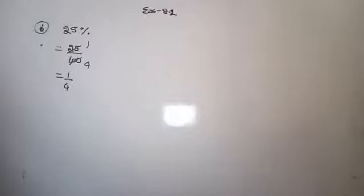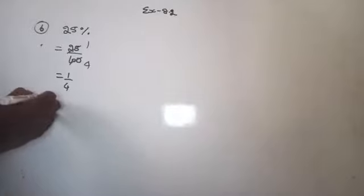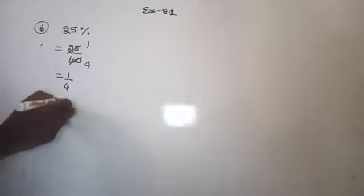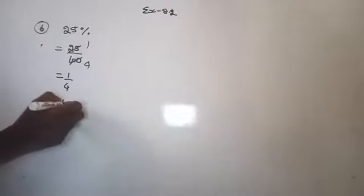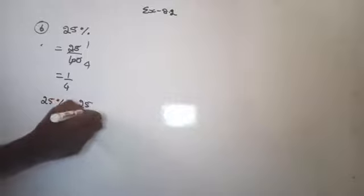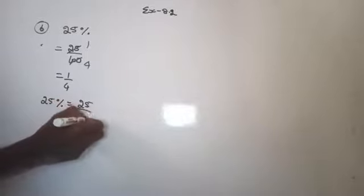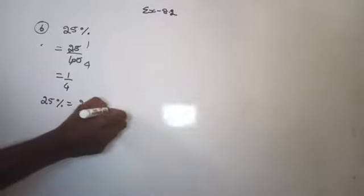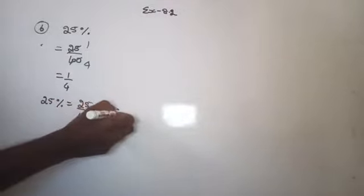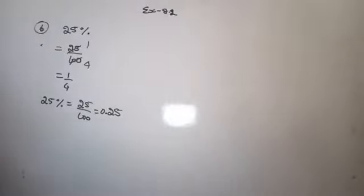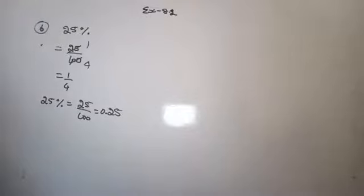Now they asked us to convert the given percentage into decimal also. That is 25% equals 25/100. You can write it as a decimal: 0.25. After the decimal point, you read the digits one by one. So it is 0.25.